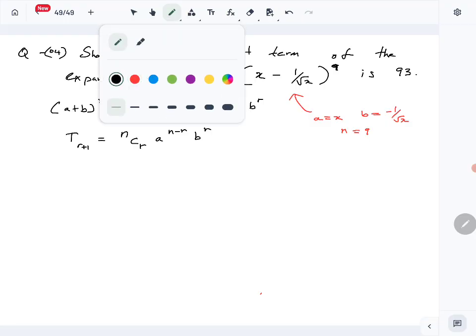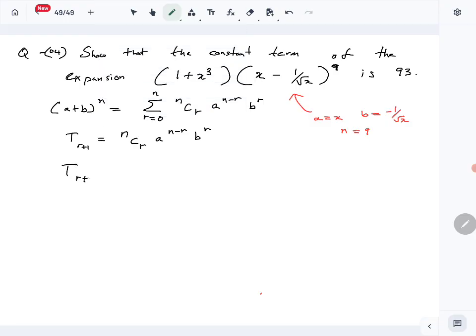So using that, let's write down the general term, R plus 1 term. So N is 9, 9CR, A is X, N is 9, 9 minus R, B is minus 1 over square root X, R is R.